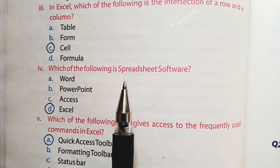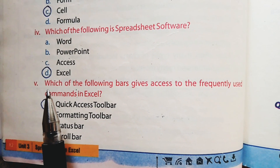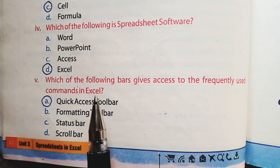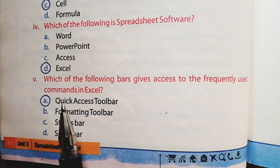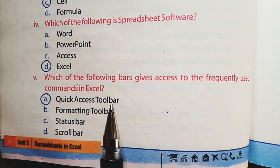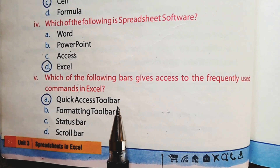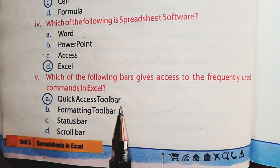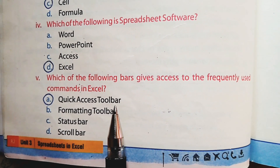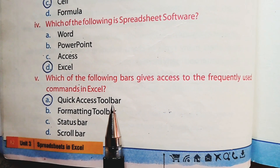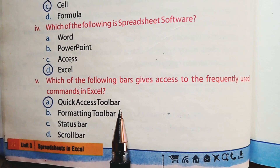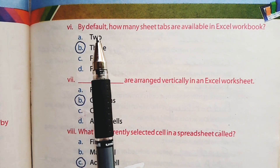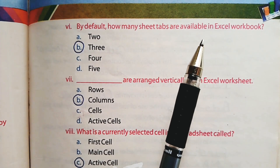Part number 5: Which of the following bars gives access to the frequently used commands in Excel? Option A is the right option — Quick Access Toolbar. We have discussed the Quick Access Toolbar in 'Components of Excel Window.' The Quick Access Toolbar is next to the Microsoft Office button and using this bar we can access frequently used commands like Save, Undo, and Redo.